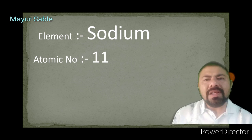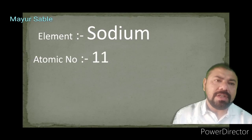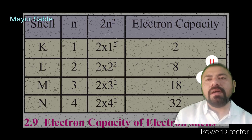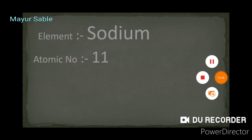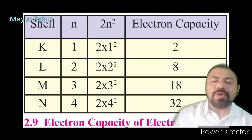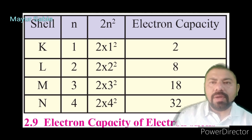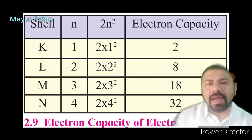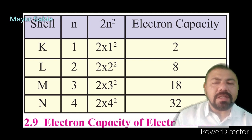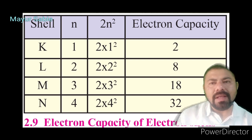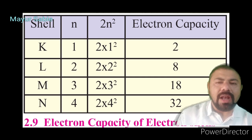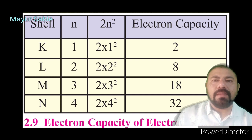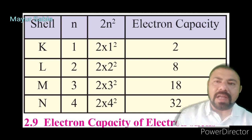For example, sodium is an element present in the first group, having atomic number 11. When we see the electronic configuration of sodium — the electronic configuration is the systematic distribution of electrons of an element into different shells, classified on the basis of electron capacity using the formula 2n², where n is the shell number. The structure of an atom contains a nucleus centrally situated, with shells around it in which electrons revolve.